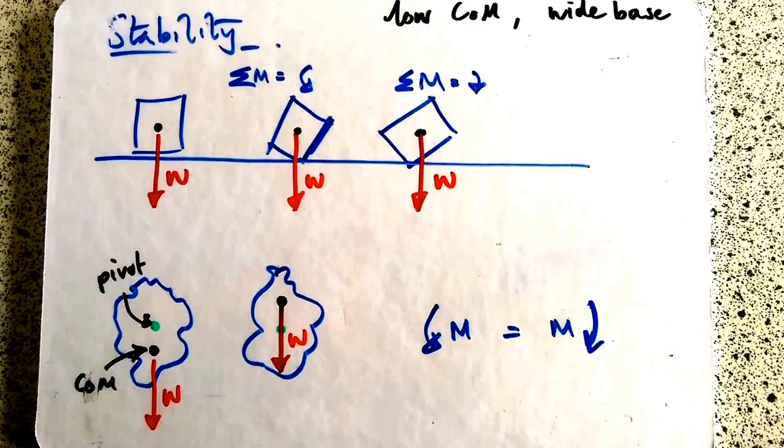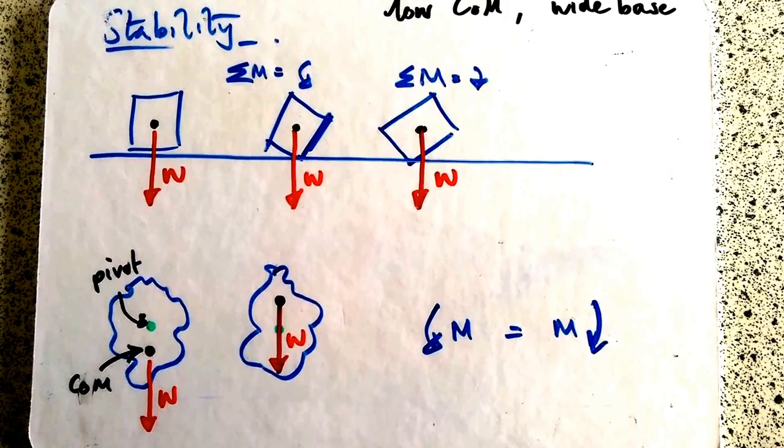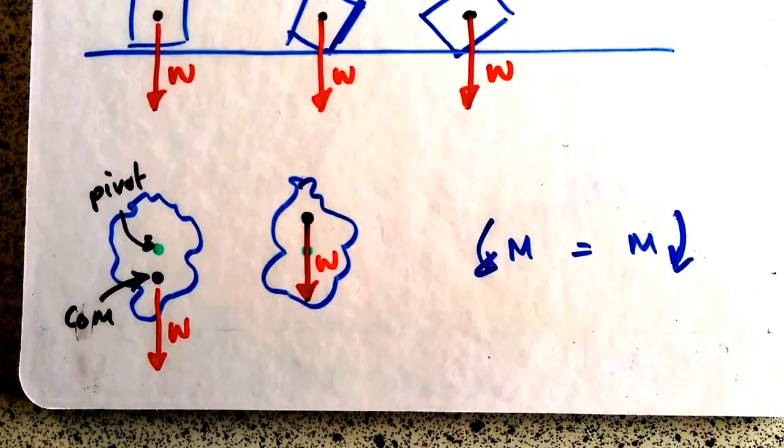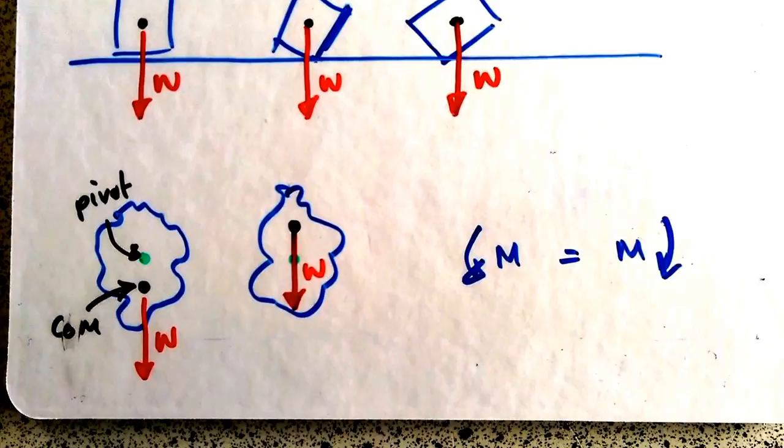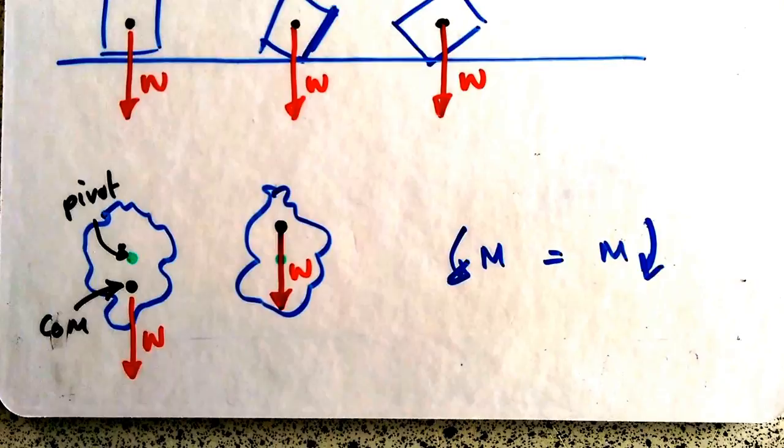At the bottom here on the left, I have a stable equilibrium where the centre of mass is below the pivot and an unstable equilibrium where the centre of mass is above the pivot. In both cases, the moments, this anticlockwise moment, equal the clockwise moments. So they're both in equilibrium but the unstable one, if it does topple, will fall into a new position. So we call that unstable equilibrium.